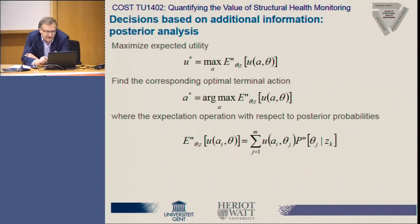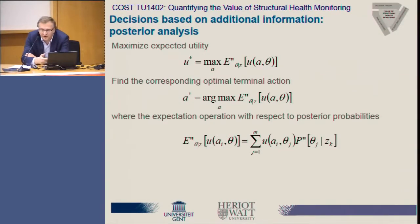First, we calculate expected utilities for all possible actions. In this case, the expectation operation is carried out with respect to the posterior probabilities, not the prior probabilities. We obtain these expected utilities for all possible actions and then select the action A-asterisk which leads to the maximum utility. This is the end of the decision process.